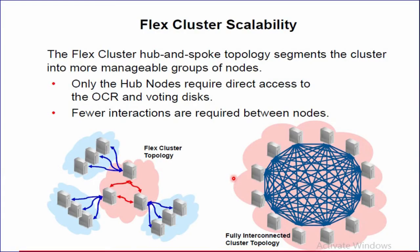Flex Cluster Scalability. The Flex Cluster Hub and Spoke Topology segments the cluster into more manageable groups of nodes. Only the Hub Nodes require direct access to the OCR and voting disk, so these Hub Nodes can directly access the OCR and voting disk. Fewer interactions are required between nodes.